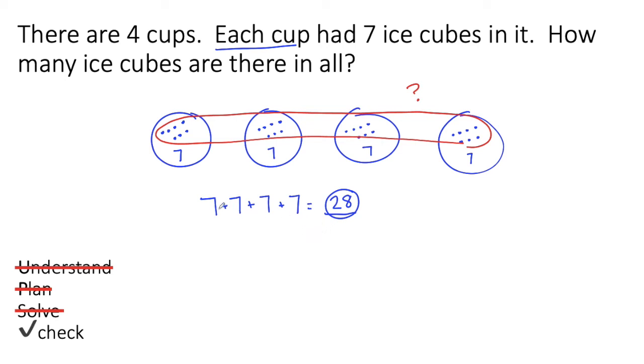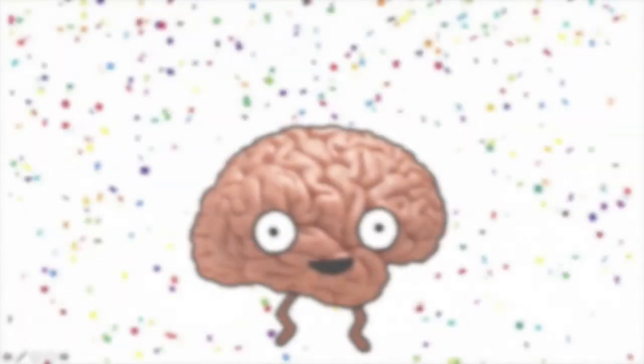We can also check our work by going back to count again. Let's make sure that seven plus seven plus seven plus seven is 28. I know that seven and seven is 14 and seven and seven is 14. And now if I add 14 plus 14, I get 28. So I checked my work two different ways. I asked myself, does that make sense? And then I went back and I did the math again.